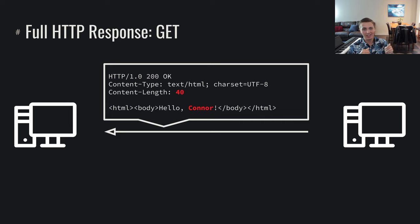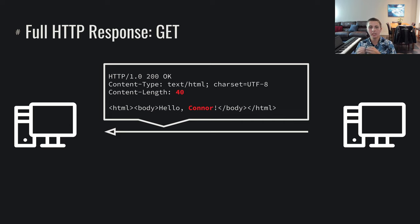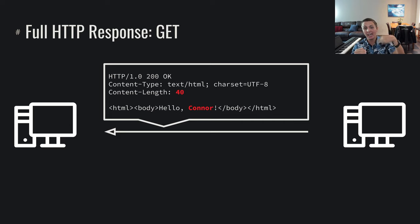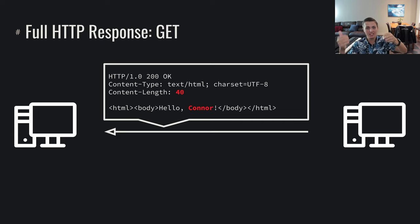You could imagine posting something else and then getting that resource again and it constantly changing. This is how the World Wide Web can be an information distributing system and a communication method. You could imagine a chat application built on top of HTTP, where you post messages to resources identifying recipients and then get those resources to retrieve messages — a full web application built on top of HTTP using all of these POST and GET requests.